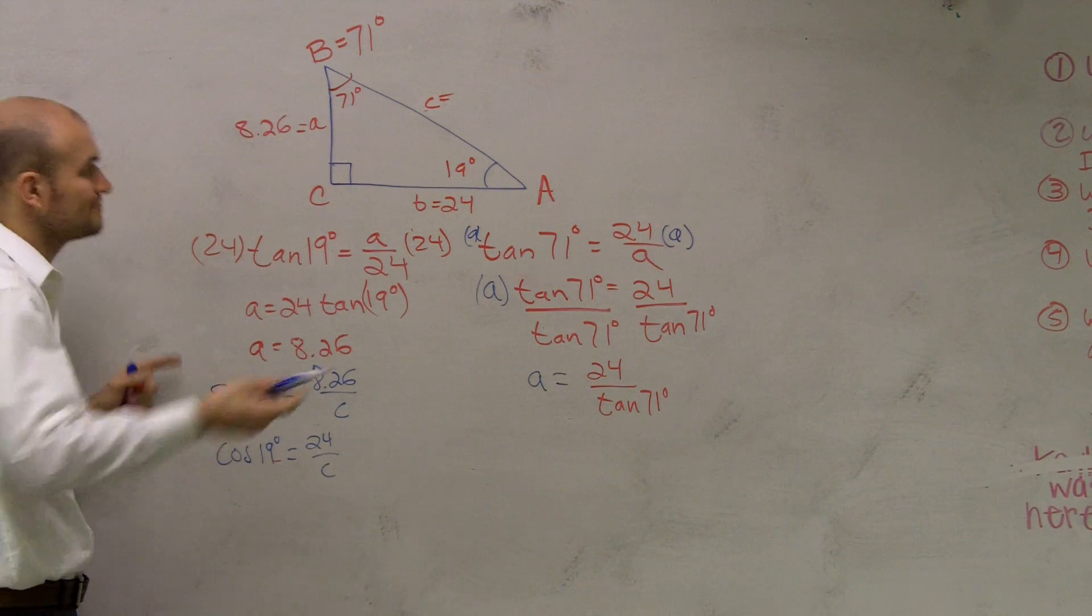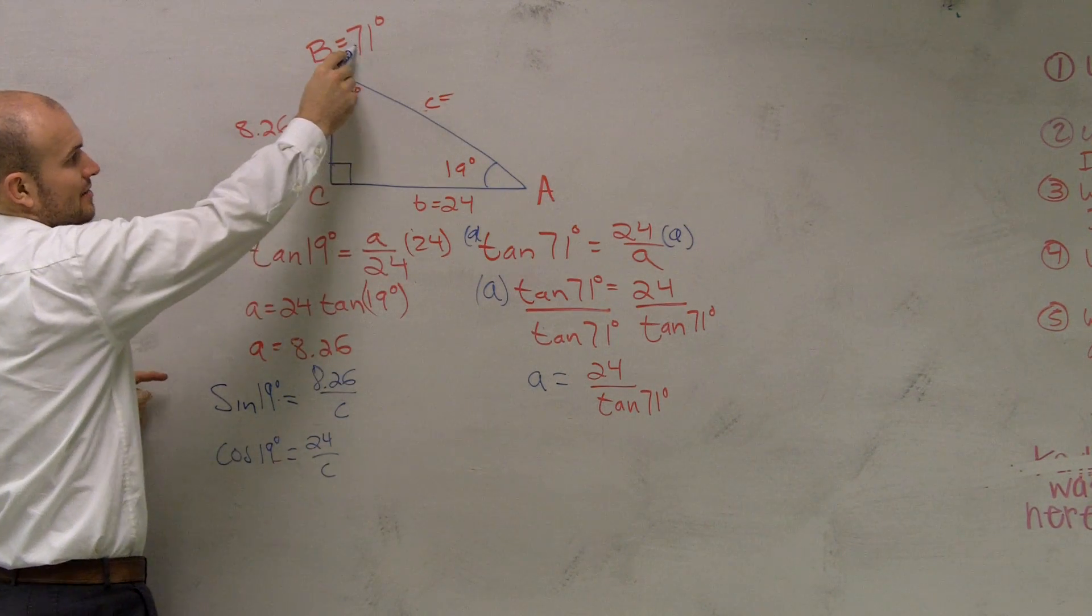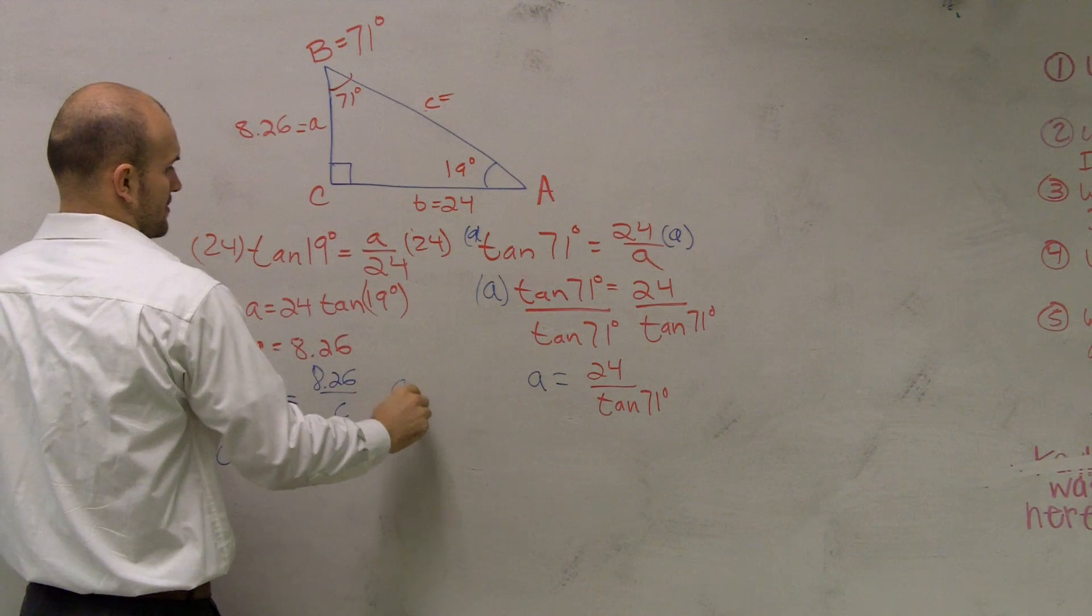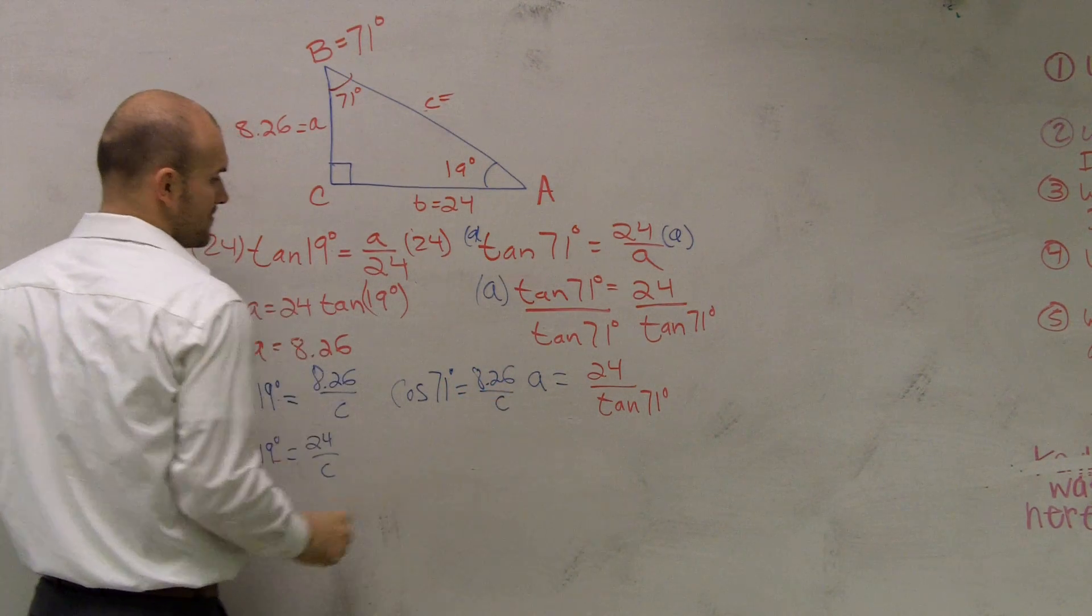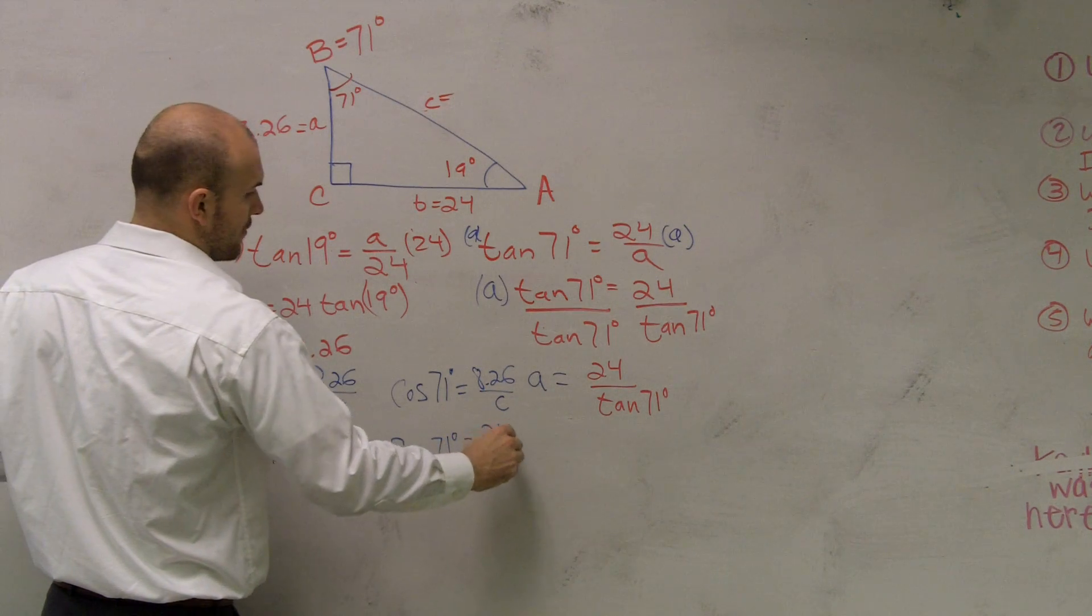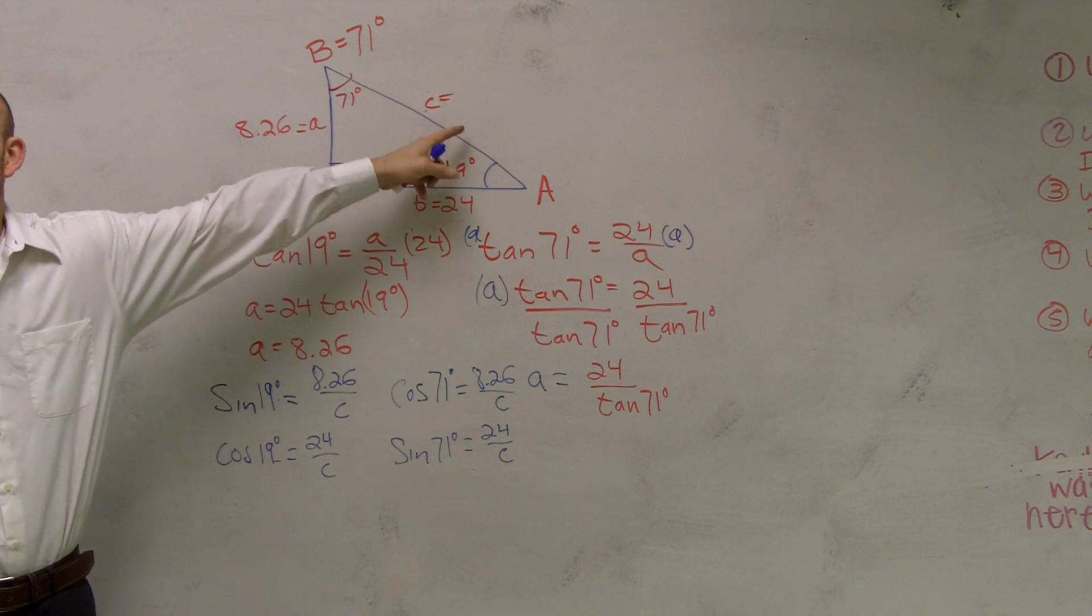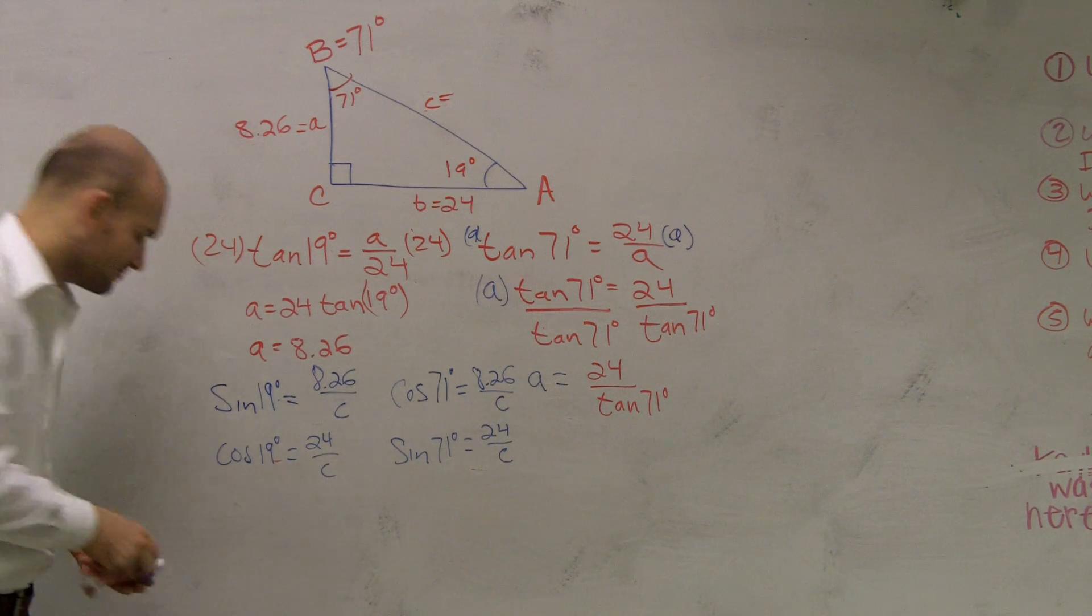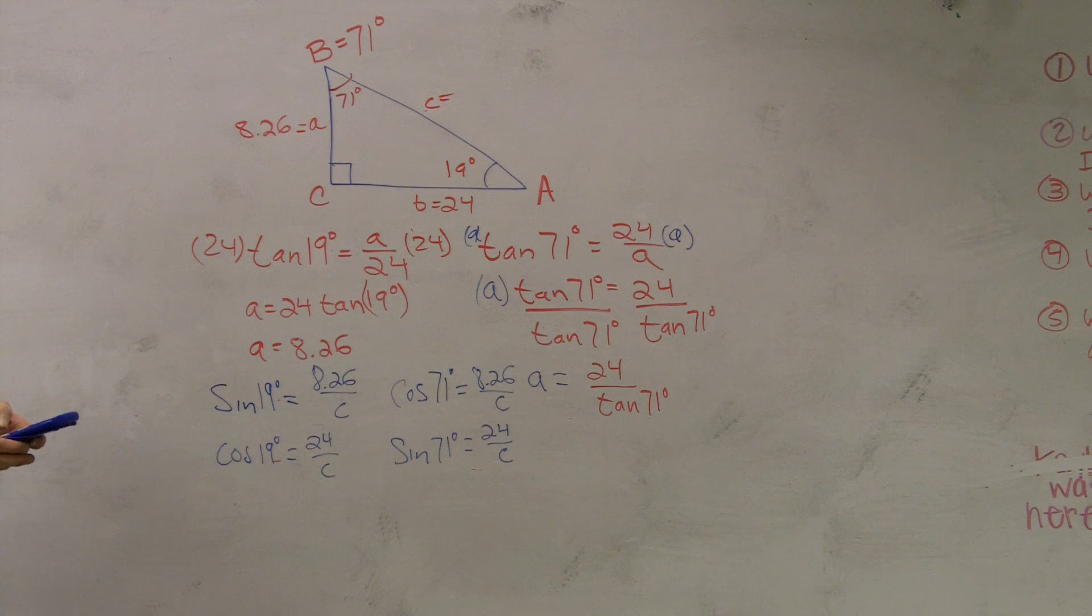Or let's say you want to use angle B. I just want to throw these out here for you. If you guys use angle B, angle B you could use cosine would be 8.26 over that, over your hypotenuse. So you could say the cosine of 71 degrees equals 8.26 over C. Or you could do the sine of 71 degrees equals 24 over C. All four of these answers are going to still give you the exact same number for the hypotenuse, as well as if you do the Pythagorean theorem. All right? And yes, like I said, the Pythagorean theorem is probably going to be the simplest way for maybe if you want to do it.